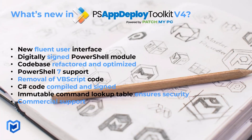V4 features a new Fluent user interface, but you still have the option to use the classic v3 UI with all the latest capabilities and security features. It is now a digitally signed PowerShell module downloadable from PS Gallery or the GitHub releases page. The codebase was completely refactored and optimized for better performance and security — it's noticeably faster than v3. They added support for PowerShell 7, removed the reliance on deprecated VBScript code, and all C# code is now compiled and signed.